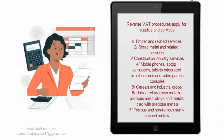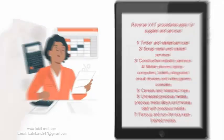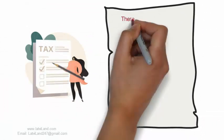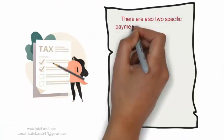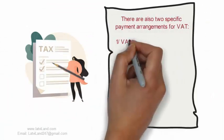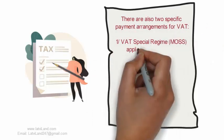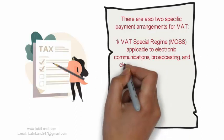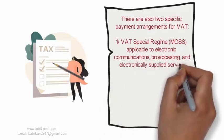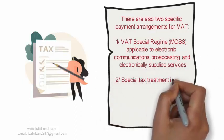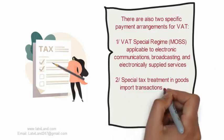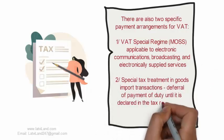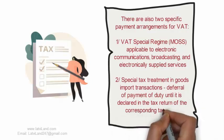7. Ferrous and non-ferrous semi-finished metals. There are also two specific payment arrangements for VAT: 1. VAT Special Regime MOSS, applicable to electronic communications, broadcasting, and electronically supplied services. 2. Special tax treatment in goods import transactions — deferral of payment of duty until it is declared in the tax return of the corresponding tax period.